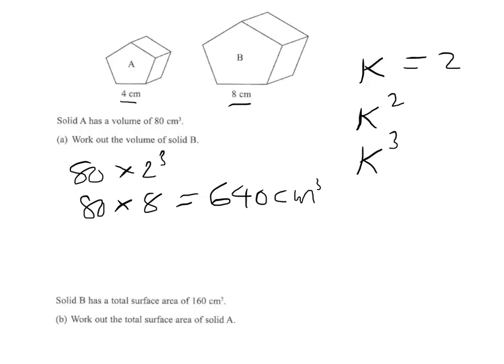Remember, the volume factor is k cubed. Now, the second part of the question is to do with the surface area. We're told that solid B, the larger surface area, is 160 centimeters squared, so we need to work out the smaller surface area.